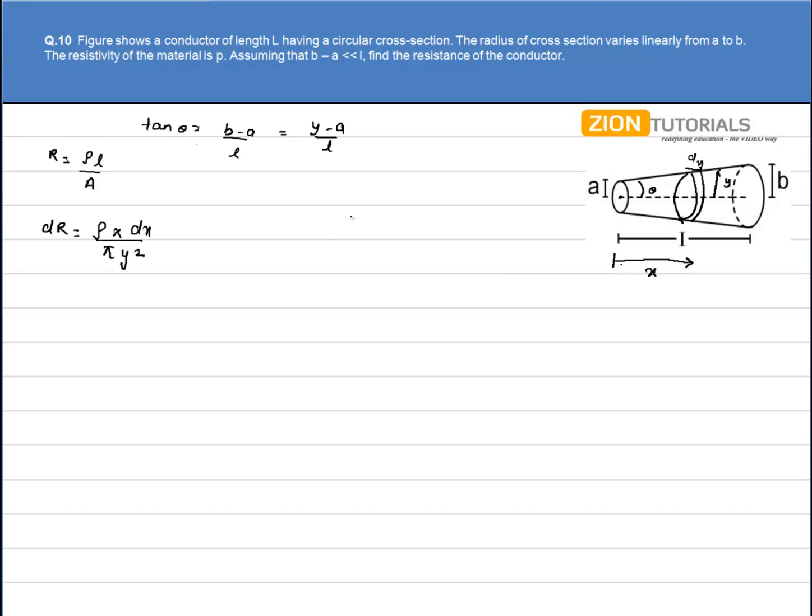Now we know that tan theta, which we wrote over here, so tan theta is equal to (y-a) by x. x tan theta is equal to y-a. So what I can do is dx is equal to dy divided by tan theta.